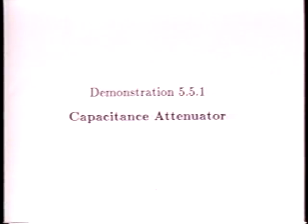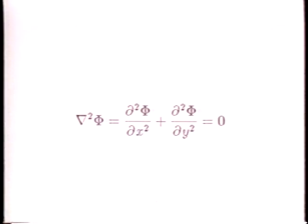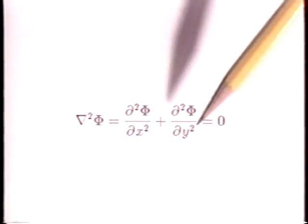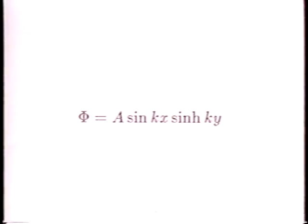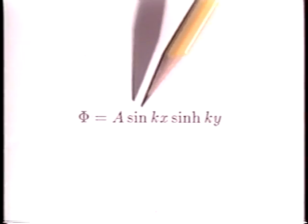The capacitance attenuator demonstrates the nature of solutions to Laplace's equation. This is the two-dimensional form of Laplace's equation in Cartesian coordinates x and y. Product solutions to this equation illustrate the nature of a potential that is periodic in one direction, the x direction.